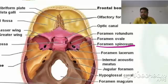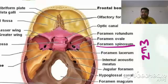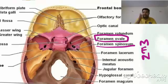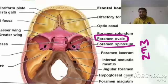From foramen spinosum, we can remember the mnemonic MEN: M is the middle meningeal artery, E is the emissary vein, and N is the nervous spinosum. The nervous spinosum is a recurrent meningeal branch of the mandibular nerve. The mandibular nerve itself passes out through the foramen ovale, but one of its branches re-enters the cranial cavity — that is why it is called the recurrent meningeal branch, and it passes through the foramen spinosum, which is why its other name is nervous spinosum.